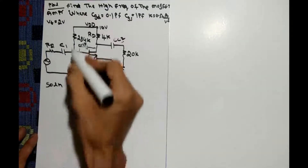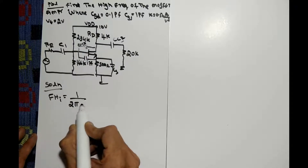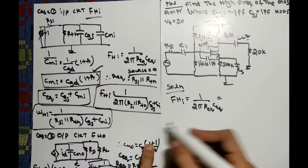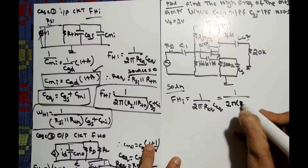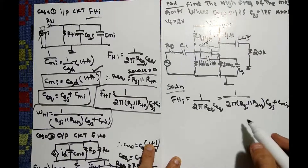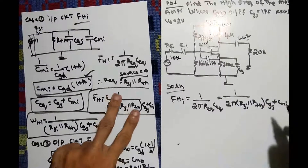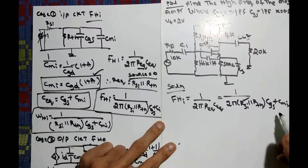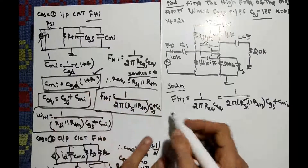First we have to find FHI. The formula for FHI is 1 divided by 2π times R_equivalent times C_equivalent. From previous relations, R_equivalent is RSI parallel to RTH, and C_equivalent is CGS plus CMI. RSI is given as 10kΩ, and RTH is found by taking 234kΩ parallel to 166kΩ. CGS is given as 1 picofarad.